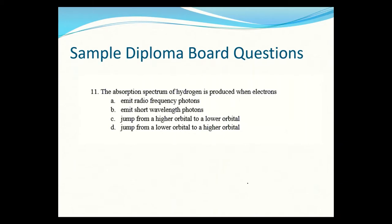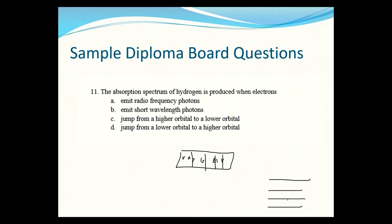An absorption spectrum for hydrogen is produced when we see all the colors — red, orange, yellow, green, blue, indigo, violet — but with gaps. Those gaps occur when photons with exactly the right frequency are absorbed, causing the electron to jump from a lower orbital to a higher orbital. Those dark lines represent those absorption transitions, so D is the correct answer.